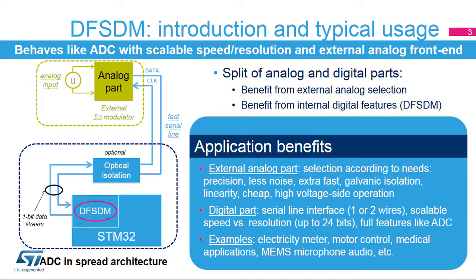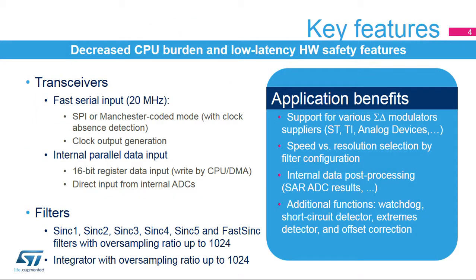The DFSDM is able to process external serial data and also internal parallel 16-bit data transfer provided by the CPU or the Direct Memory Access Controller, or DMA, from memory. Transceivers provide the serial connection to the external sigma-delta modulator. They support serial connections with configurable protocols, SPI or Manchester-coded, and configurable parameters. Their functions will be explained later in detail.